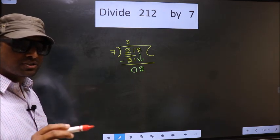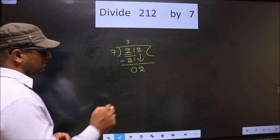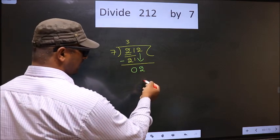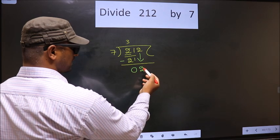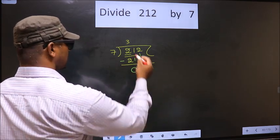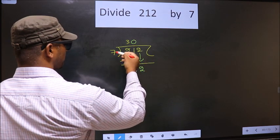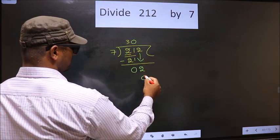Instead, what you should think of is, what number should we write here? If we write 7 here, that is larger than 2. So what we do is we take 0 here. So 7 into 0 is 0.